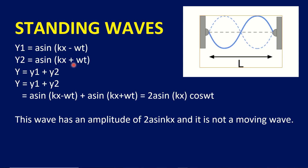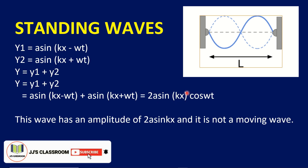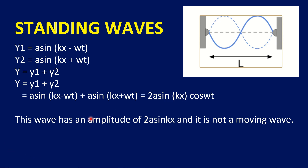By the principle of superposition, y equals y1 plus y2. That is, y equals a sin(kx minus omega t) plus a sin(kx plus omega t). Using the sum-to-product identity, this gives y equals 2a sin(kx) cos(omega t). This wave has an amplitude of 2a sin(kx).